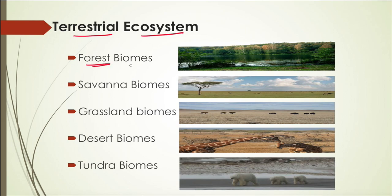The first type is forest biomes, covering what kinds of forests we have. The second is savanna. Savanna is a kind of transition phase between forest biomes and grassland biomes — it is not complete trees and not a complete grassland, but a combination of both, acting as a transit between these two phases.